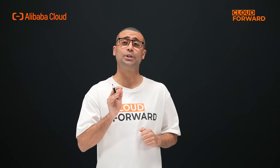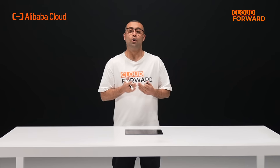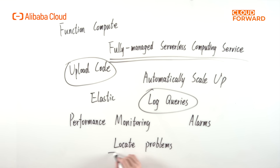serverless computing service. Under the Function Compute architecture, developers only need to focus on coding and uploading the code to Function Compute, which means application deployment. When high concurrency requests come in, developers don't need to manually scale up. Function Compute will automatically scale up in milliseconds based on the request volume, run tasks elastically and reliably, and provide built-in functions such as log queries, performance monitoring and alarms to help developers detect and locate problems.